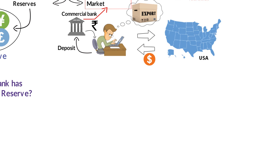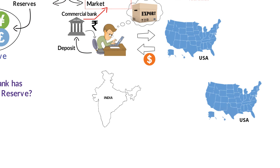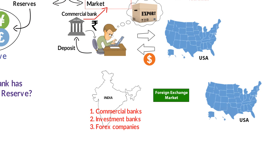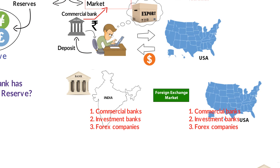To simplify things, let's use an illustration with two countries — India and the United States — and the foreign exchange market in the middle. Both countries have commercial banks, investment banks, and foreign exchange companies consisting of brokers and dealers. Then there is a central bank — in India, the Reserve Bank of India, and in the United States, the Federal Reserve System.